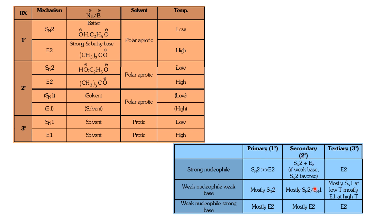Summary of reactivity: primary halides mostly favor SN2; secondary halides mostly favor SN2 or SN1 depending on conditions; tertiary halides mostly favor SN1 at low temperature or E2 at high temperature. With a weak base, SN2 is preferred. With a strong base, E2 is preferred. These patterns apply across primary, secondary, and tertiary substrates.